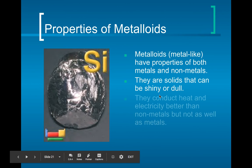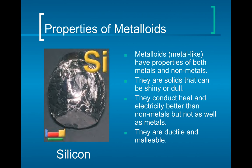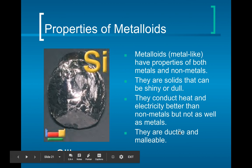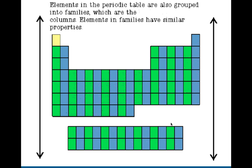Properties of metalloids: metalloids have properties of both metals and non-metals. They're solids that can be shiny or dull depending on what's around them. They conduct heat and electricity better than non-metals but not as well as metals. Silicon, for example, is what our computers and phones have a lot of — you don't want it to conduct too much heat because it gets really hot. They are ductile and malleable, which is useful for circuit boards.